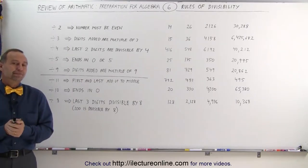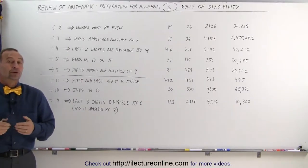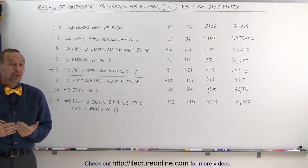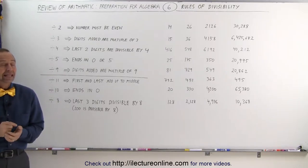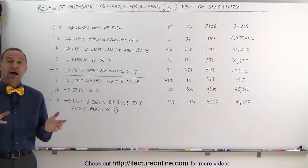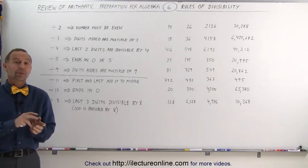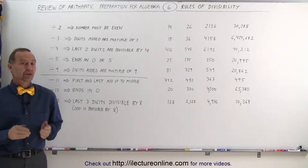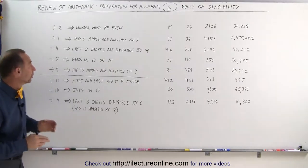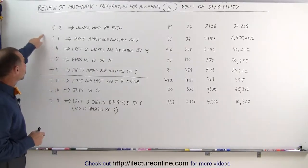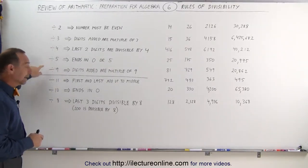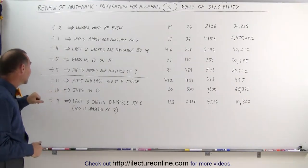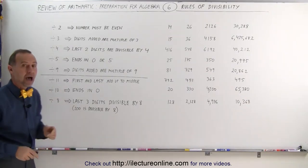Welcome to Electronline. Let's take a look at what we call the divisibility rules. It's actually really handy if you know how to figure out if a number is divisible by another number, especially the numbers 2, 3, 4, 5, and 9, and we'll also take a look at 11, 10, and 8.